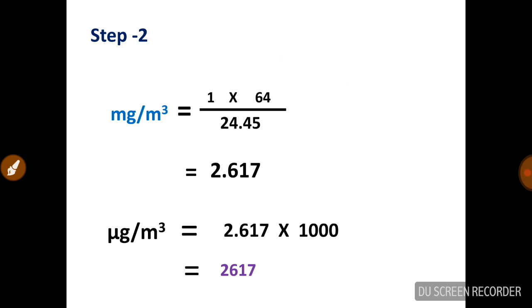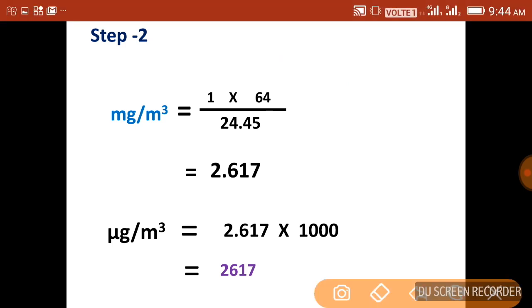we will get our answer in milligram per normal meter cube. Now we can convert this value in microgram by multiplying it with 1000 and we will get our answer.